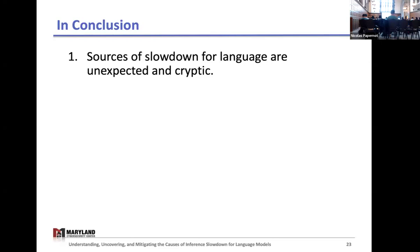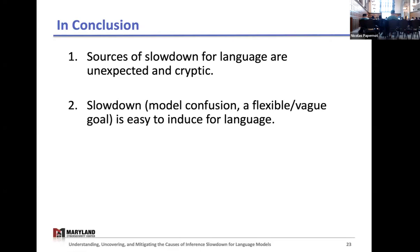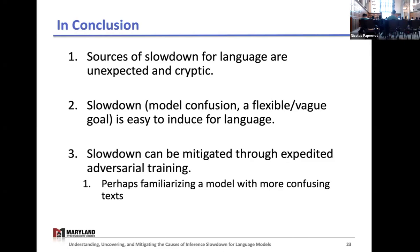In conclusion, the main points I want to leave you with are: sources of slowdown for language are both unexpected—they don't match our assumptions—and cryptic, hard to place on certain discernible patterns in a text. Slowdown is linked to model confusion, which we consider a flexible and vague goal, and it's easy to induce for language. We can mitigate slowdown through our proposed method of expedited adversarial training. We hypothesize this may relate to familiarizing a model with more confusing text—the synthetic samples we create could be thought of as more confusing because we're replacing words with random words, or even with synonyms, potentially ending up with hard-to-infer text. Through familiarizing a model with these types of texts, perhaps we're allowing it to be more confident with slow texts in general. Thank you for listening.